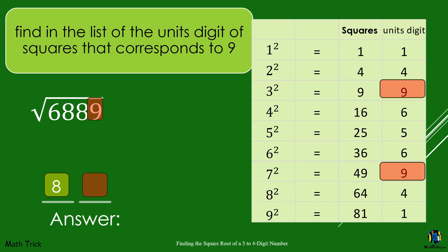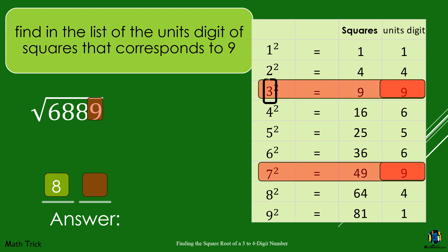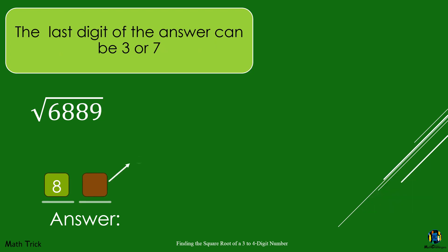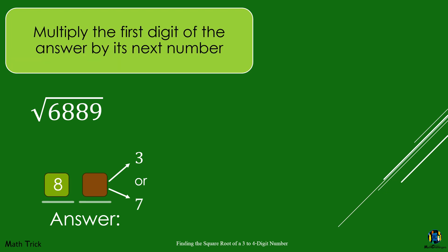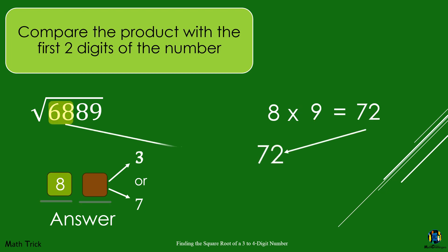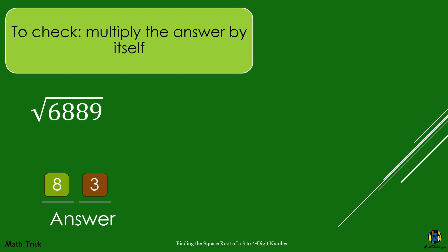If the 1's digit of the square is 9, then the square root would either end with 3 or 7. To choose between 3 or 7, multiply the first digit of the answer by its next number: 8 times 9 equals 72. Compare the product with the first two digits of the number. 68 is less than 72, so choose the smaller number. The final answer of the square root of 6,889 is 83.